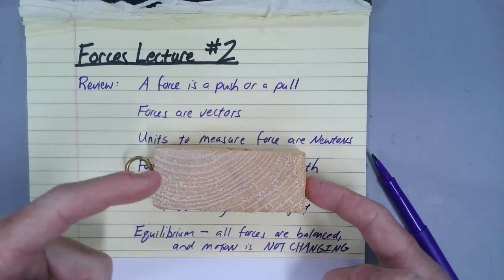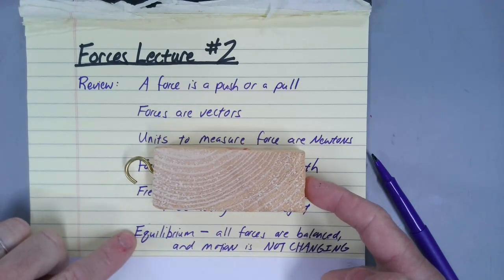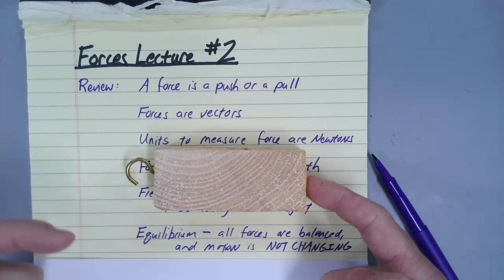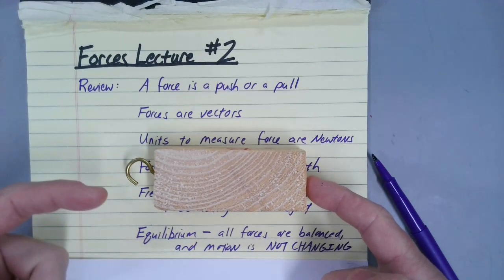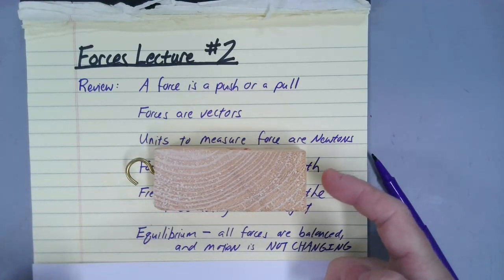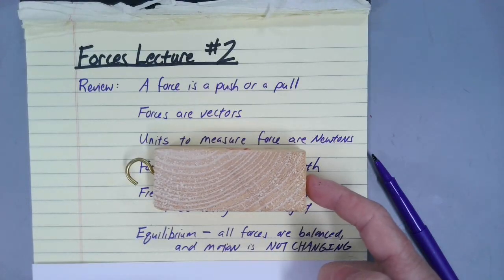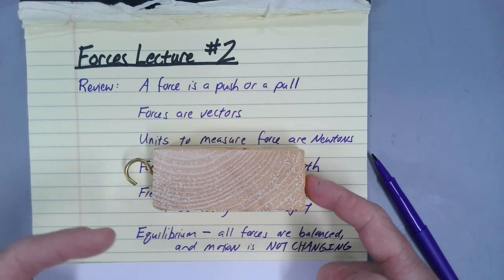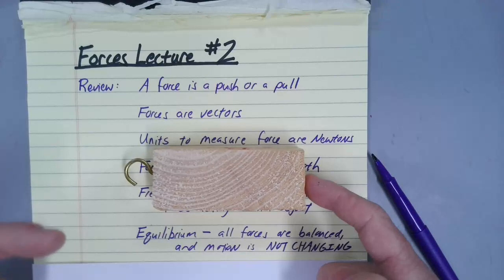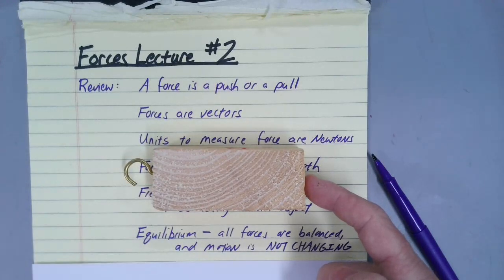If I push on the block, I've introduced an applied force in this direction. The block still isn't moving, so it's still in equilibrium. That means there must be a force acting against my pushing — that particular force in this case would be friction. This is why when I apply a force it doesn't move, because the frictional force is working against me.